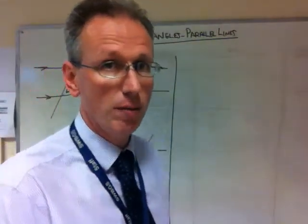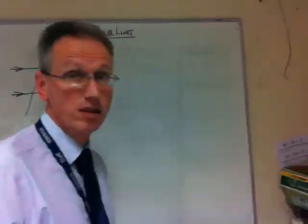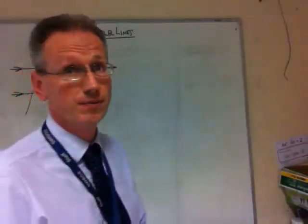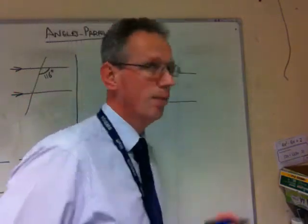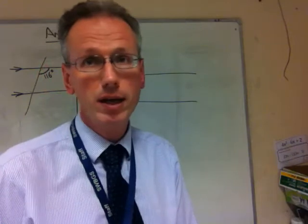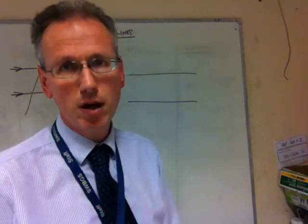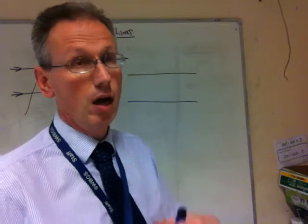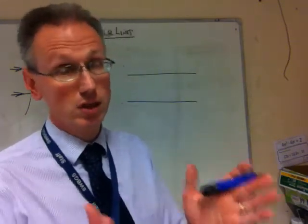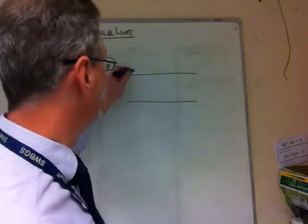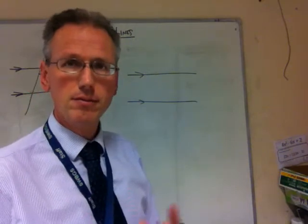Let's have a look at parallel lines. The first thing to remember is knowing exactly what they are. Parallel lines are simply two lines that remain the same distance apart at all times. It's often easier to think of them as train tracks, because the distance apart never changes. They are shown by two arrows.